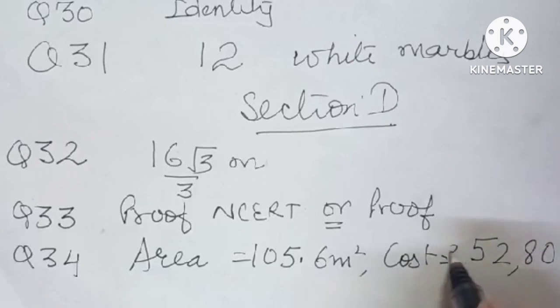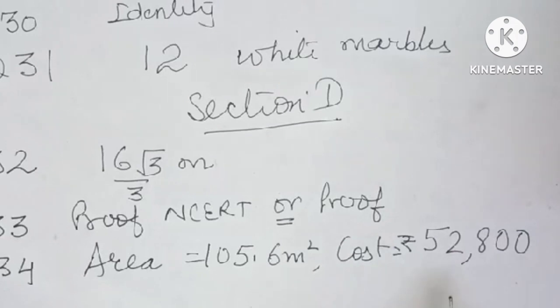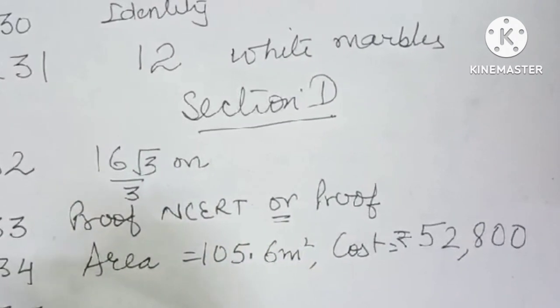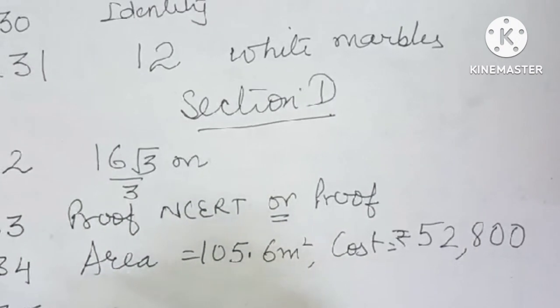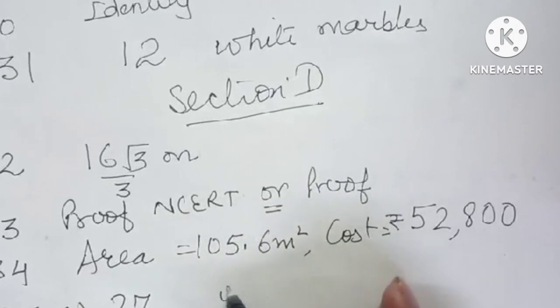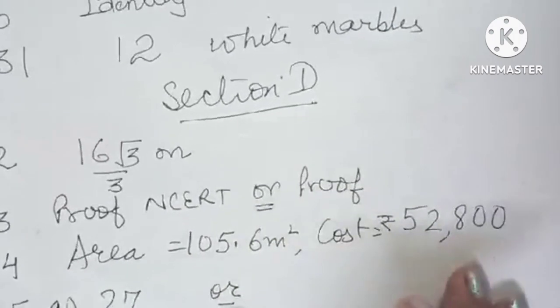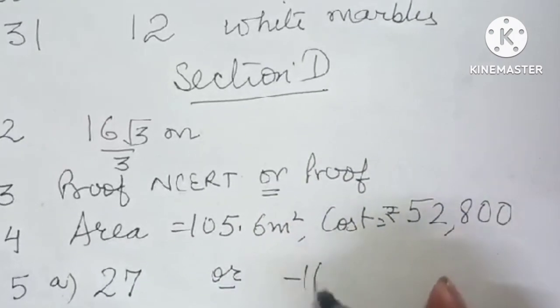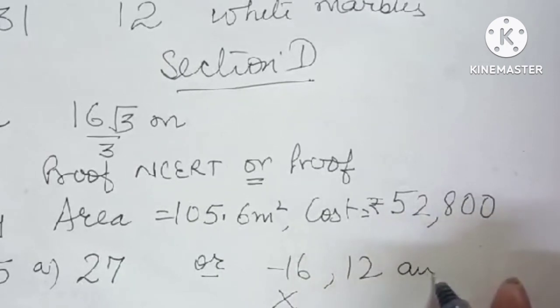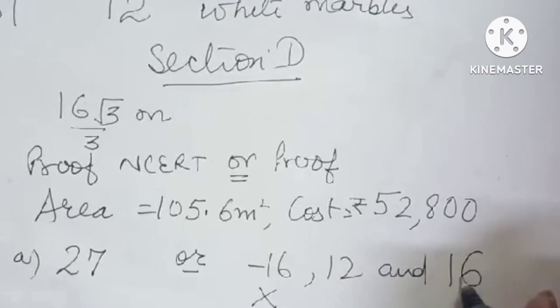For question number 35, the answer to A part is 27. And the or part is, first of all, X comes out to be minus 16 or 12. Minus 16 is rejected. So 12 we select, and 12 and 16 are the sides of the squares with unit. Do not forget to put the unit.